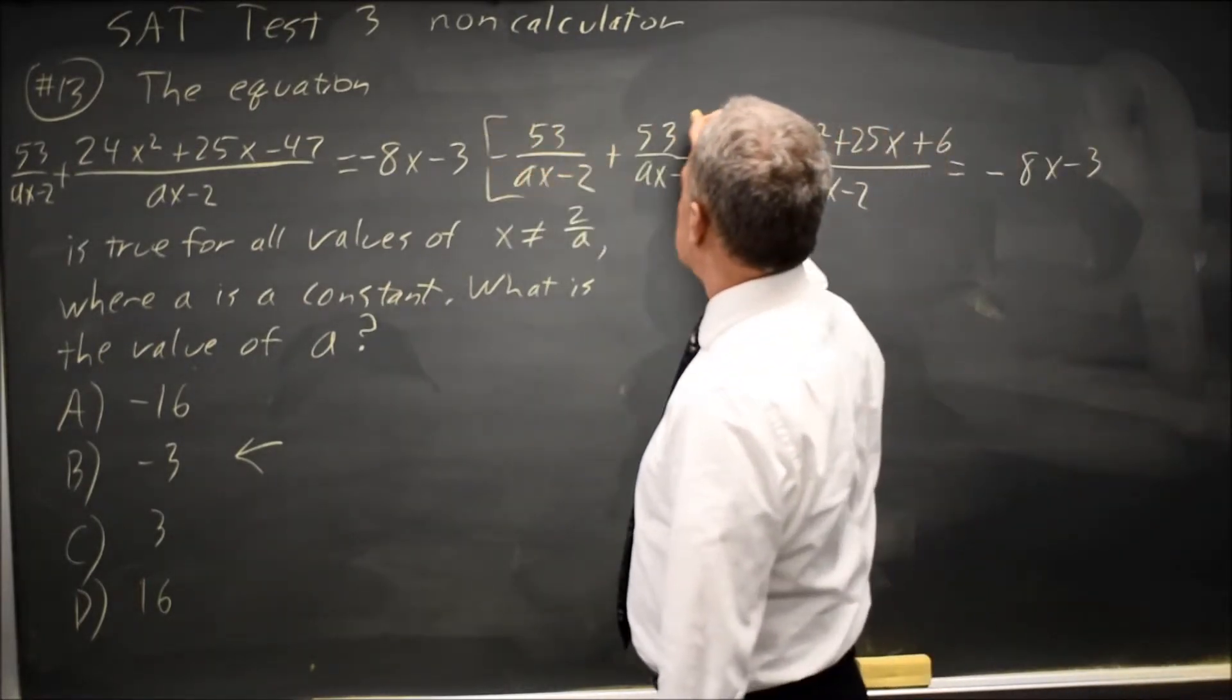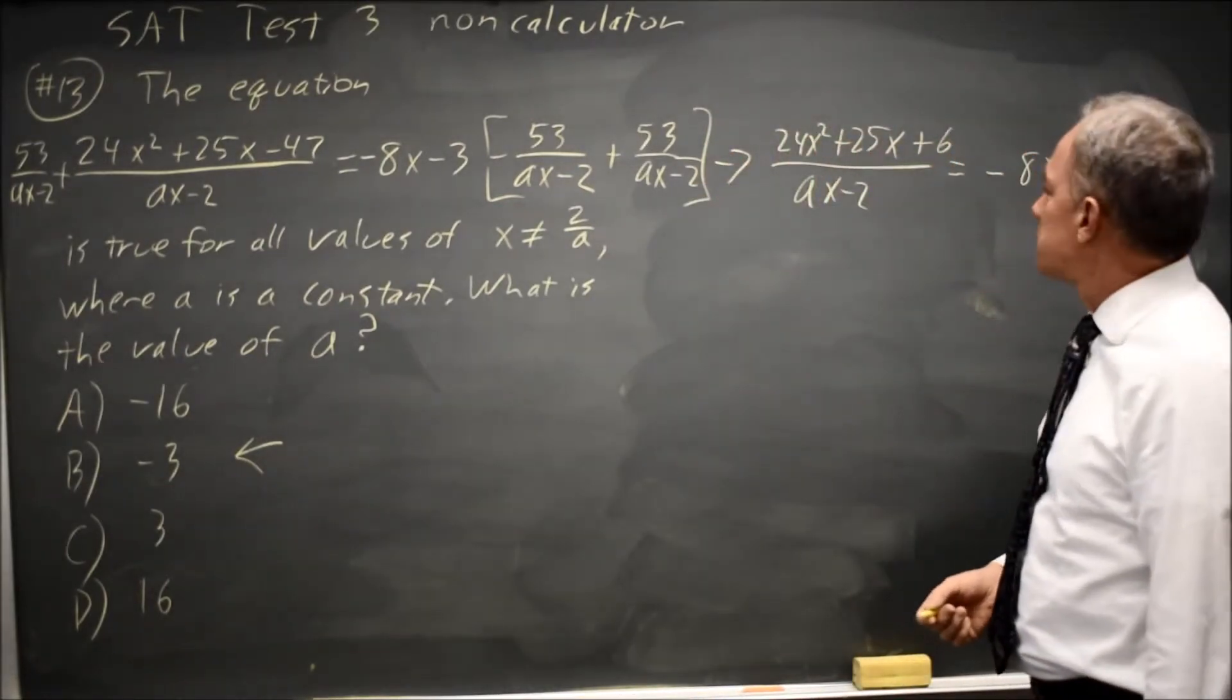because these two terms cancelled, that's why I added 53 over AX minus 2.